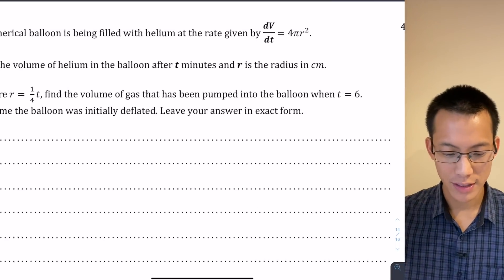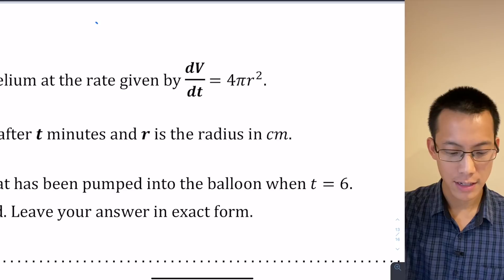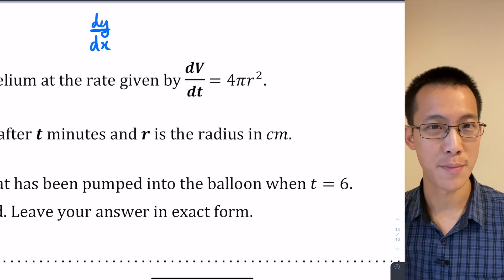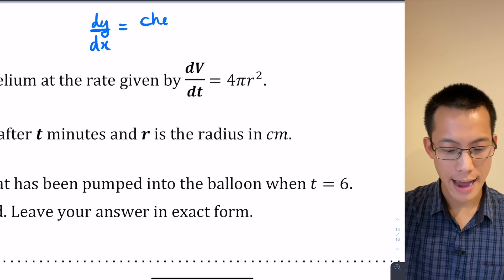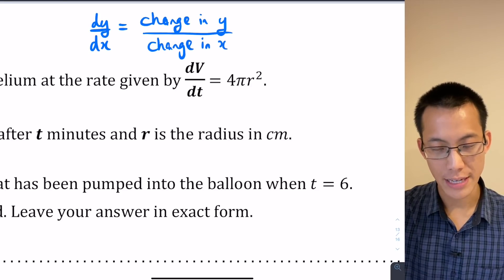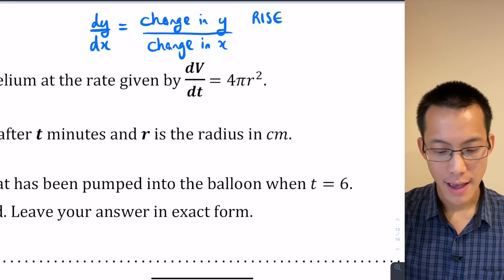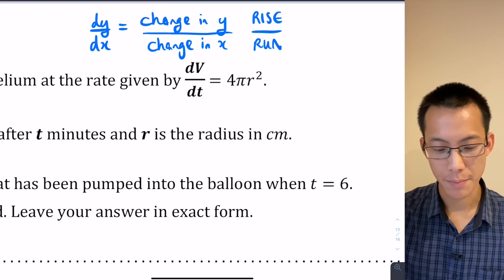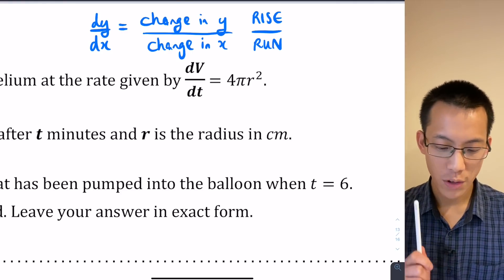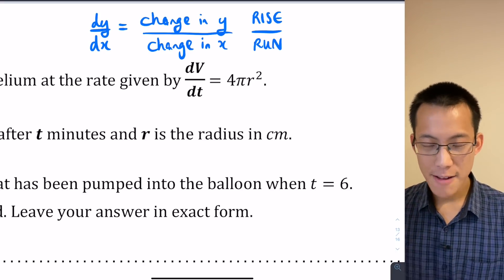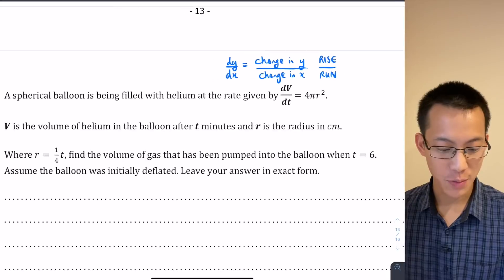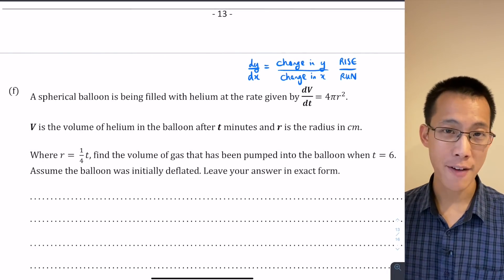Before we go any further, let's see what that means. When you see dv/dt, we're used to seeing dy/dx. That d stands for delta, which means change. This is really a change in y divided by or compared to a change in x. Usually we say change in y is a vertical change, we call that rise, and change in x is a horizontal change, we call that run. When you see dv/dt, you're seeing change in volume compared to change in time. So how is the volume changing over time? That's why it's being inflated with helium, and this is the rate 4πr².